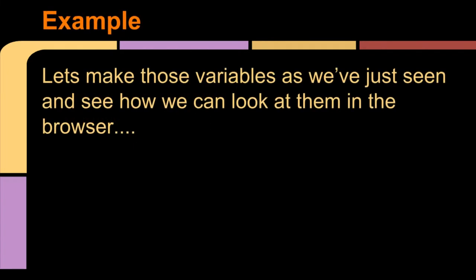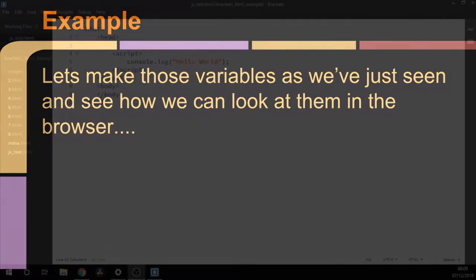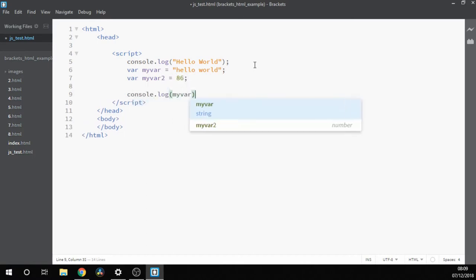Let's have a look at those variables and see what they look like in the browser. So go back to our previous program. And underneath, we'll create our variables. You'll notice when I write console.log of myvar, I don't put it inside inverted commas. If I did, it would just print out the word myvar and not the value of myvar, which is what we actually want.